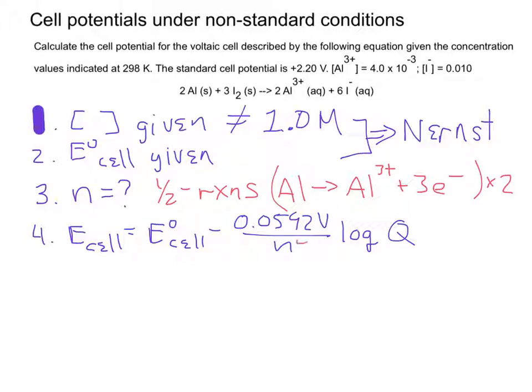Now, we already figured out what N is. 0.0592 is given to us. We're given the standard cell potential. So, that tells us the next thing we have to solve for is Q.